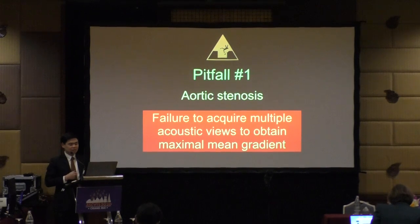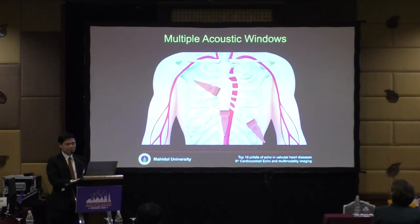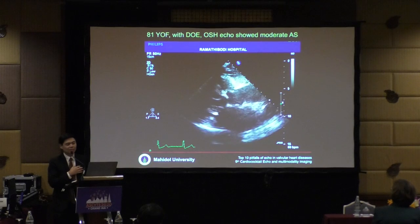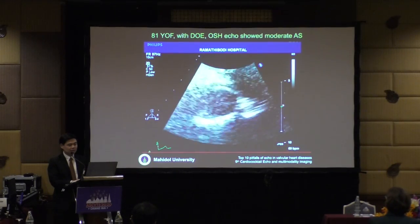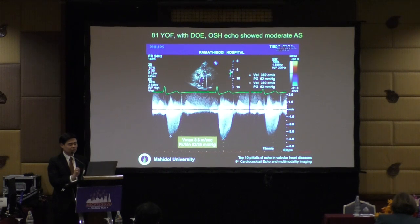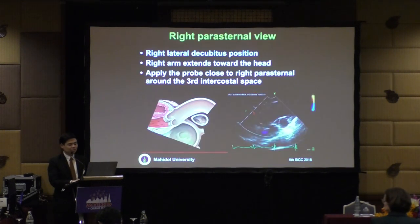Pitfall number one is about aortic stenosis. Most of the time, there is a failure to acquire multiple acoustic views to obtain maximum mean gradient. An example case: an 81-year-old female with dyspnea on exertion and outside echo showing moderate aortic stenosis. Looking at the valve, it doesn't open well. They obtained a Vmax of 3.6, giving a peak gradient of 62 and mean gradient of 35.